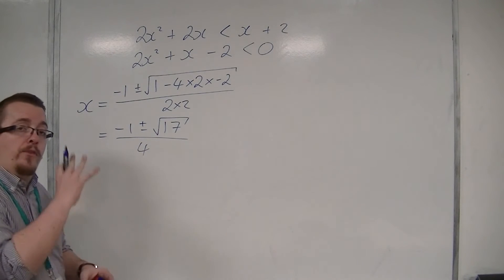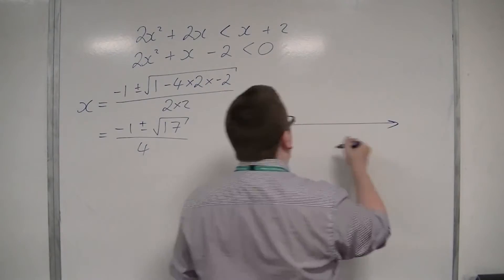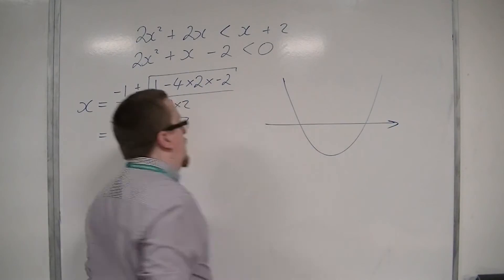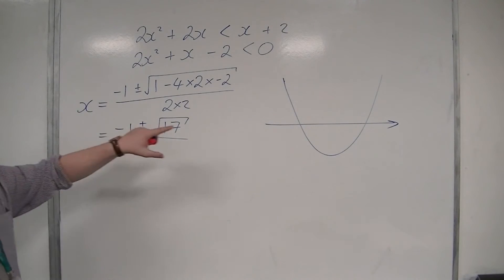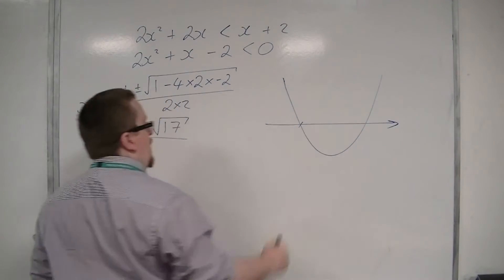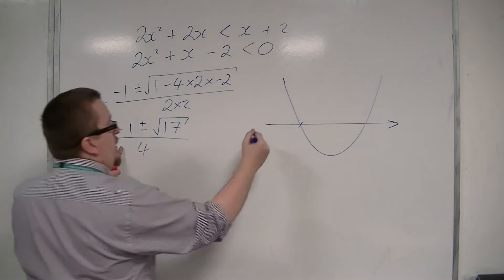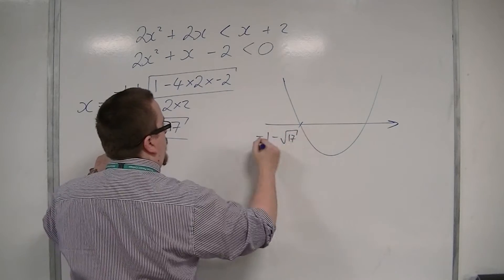We can now sketch the curve. This solution, this root, will be (-1 - √17)/4.